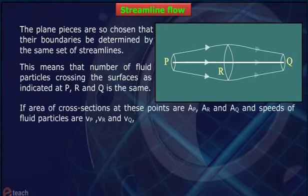If area of cross-sections at these points are A_P, A_R and A_Q and speeds of fluid particles are V_P, V_R and V_Q.